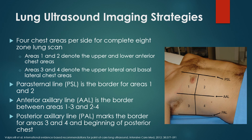Some imaging strategies with lung ultrasound: there are four chest areas per hemithorax for a complete eight-zone lung scan, with some protocols going as high as 12 and 16, including posterior regions. Areas one and two are the upper and lower anterior chest areas. Three and four are the upper lateral and basal lateral areas. The parasternal line is the border for areas one and two, the anterior axillary line borders areas one, two, three, and four, and the posterior axillary line marks the border for areas three and four into the posterior chest.